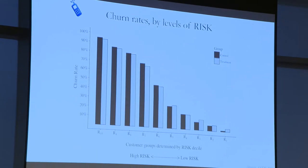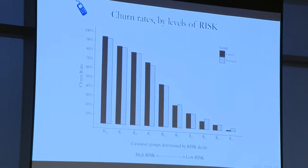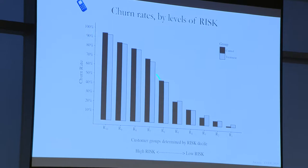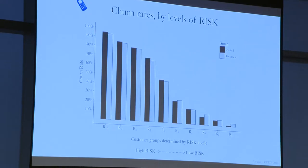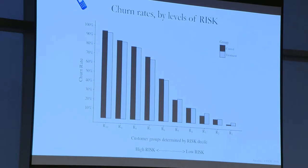The first thing I'll show you is churn rates when I sort customers on the level of risk. This line going down means my churn model was pretty good. The people on the left are those predicted to be at the highest risk of churning — their churn rates are in the 90s. As I go right, the churn rates decrease. My churn model was not a bad one.